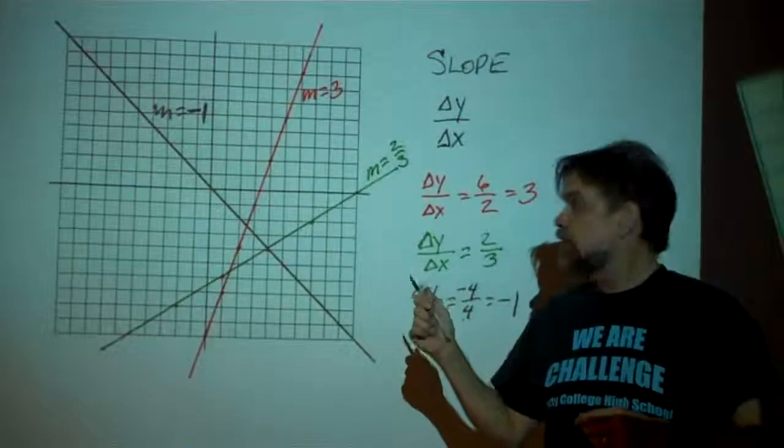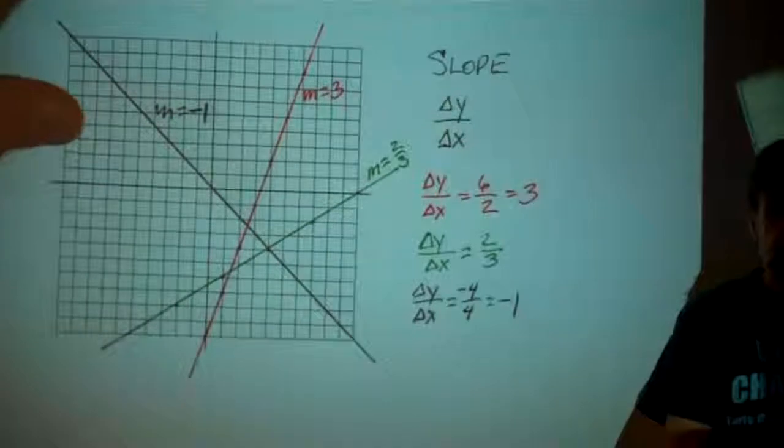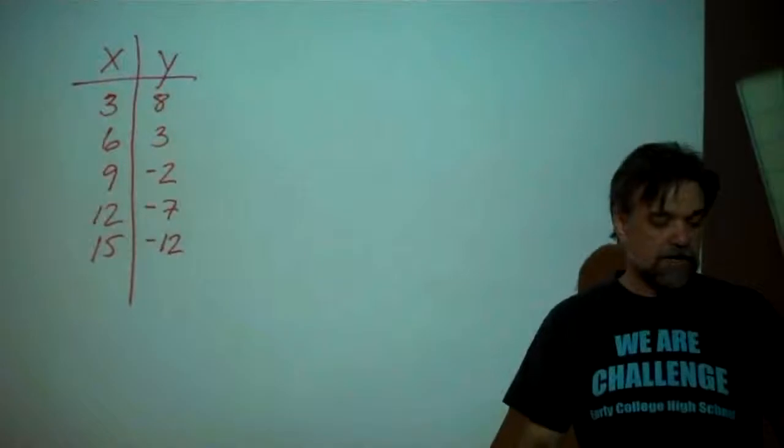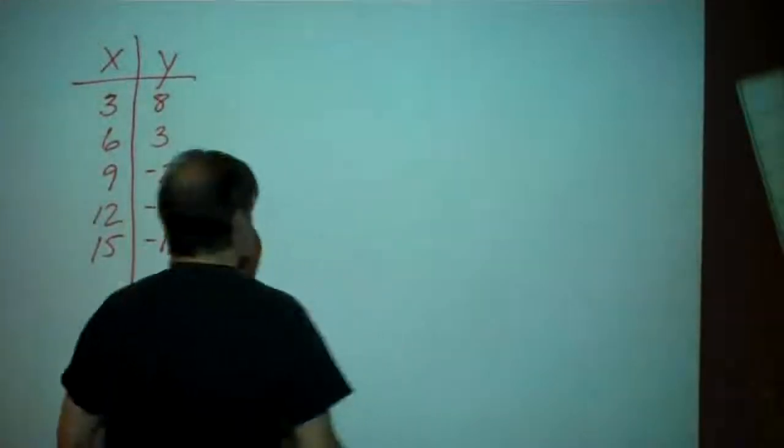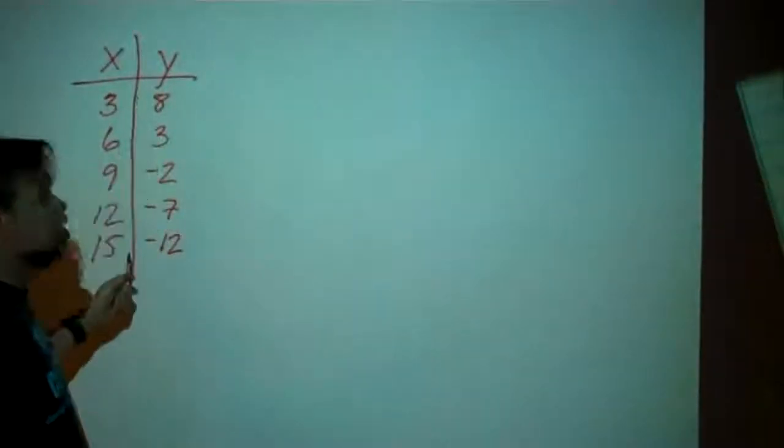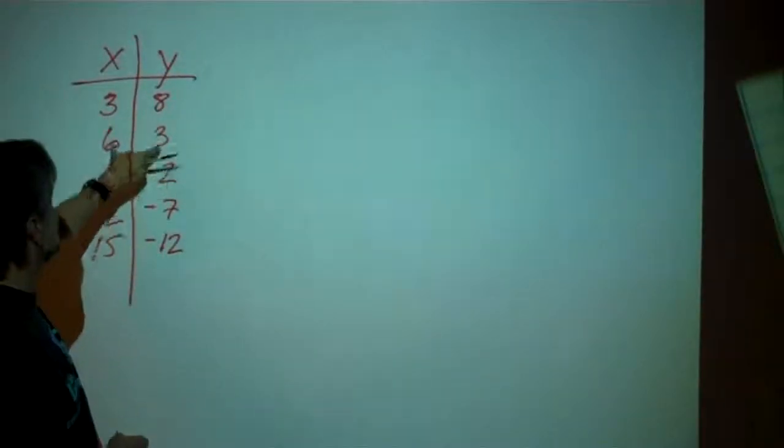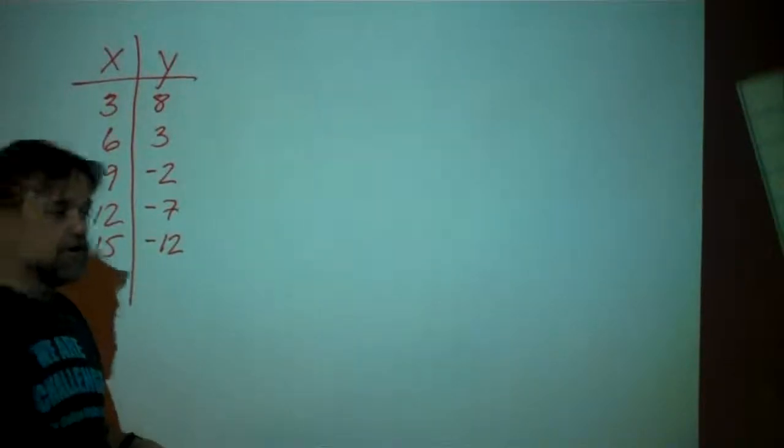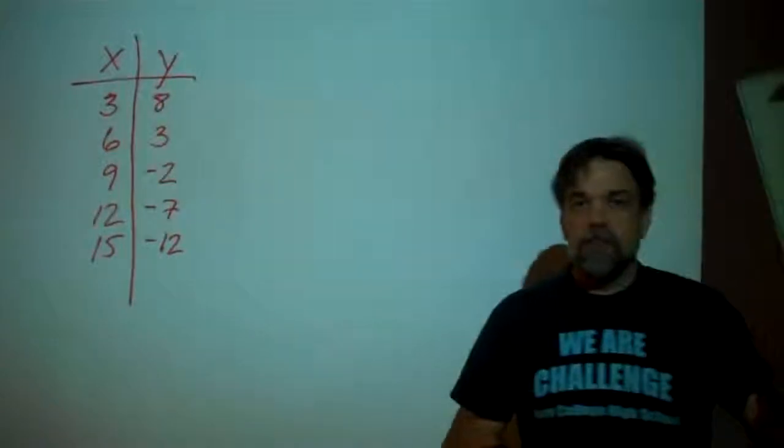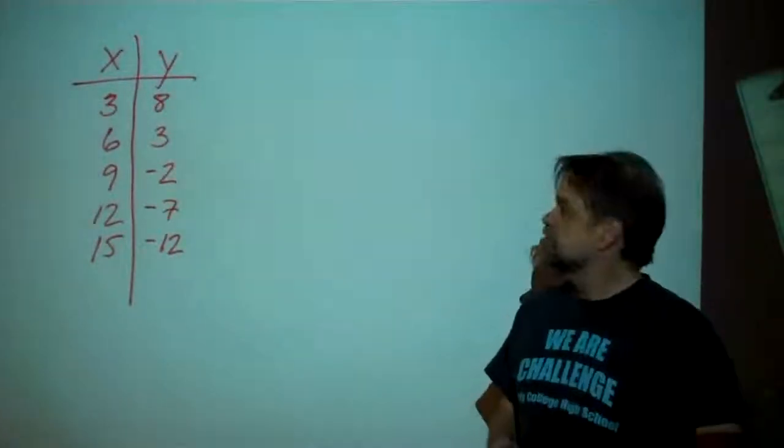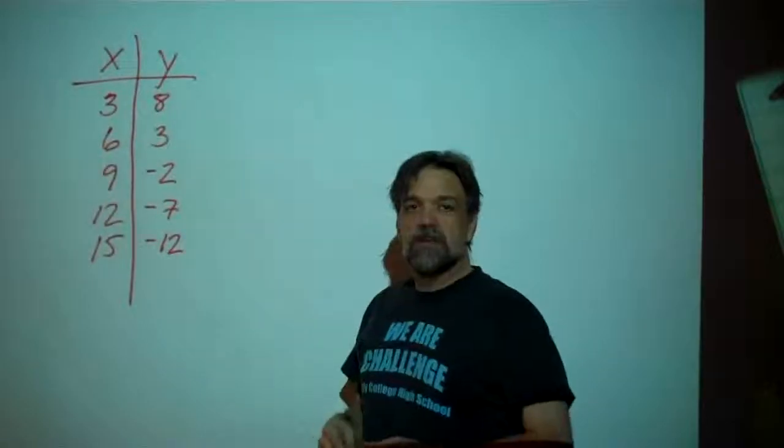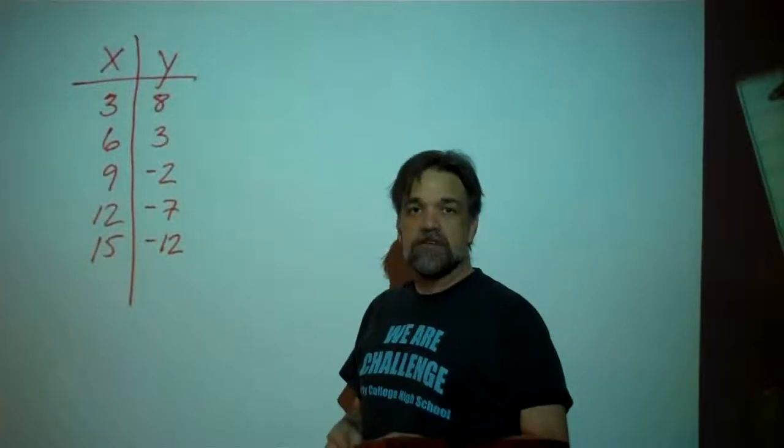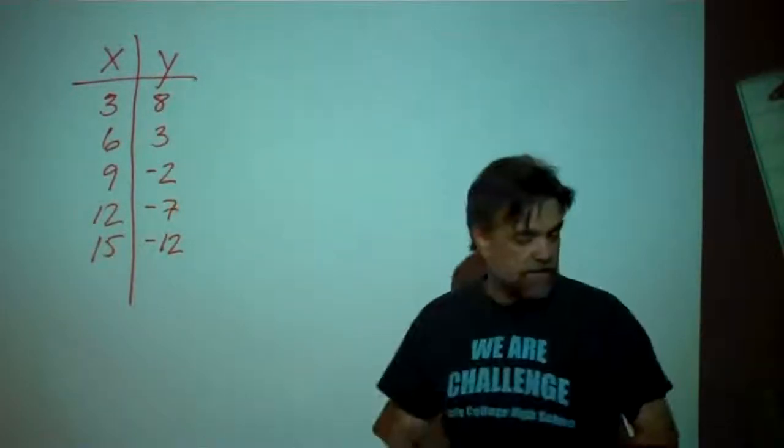Now, that's how to find slope from a graph. But what if you're not using a graph? What if you're using, let's say, a table of values? So I have this linear function here that is defined by this table. It says it goes through the point 3, 8, and through the point 6, 3, and through the point 9, negative 2, through the point 12, negative 7, through the point 15, negative 12. What do we do then? Well, pretty much the same thing. You would choose any two points in this table, and you would calculate the change in the x and the change in the y.